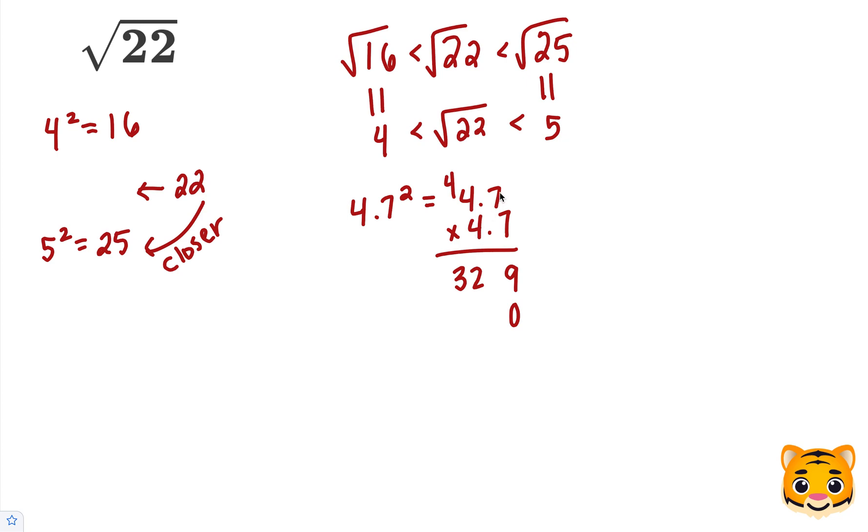Add our 0. 4 times 7 is 28, carry our 2. And then 4 times 4 is 16, plus 2 is 18. Now when we add these values together, we end up getting 22.09.